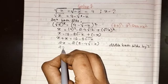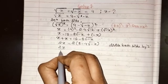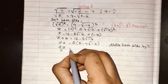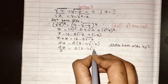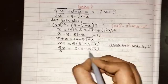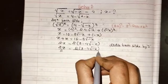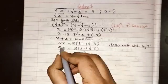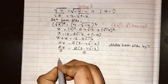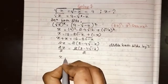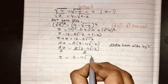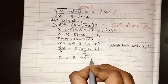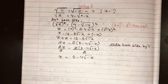Now we divide both sides by 2. So 2x/2 = (8 - 4√(-x))/2. The 2s cancel, leaving us with x = 8 - 4√(-x).